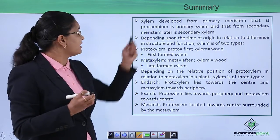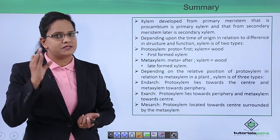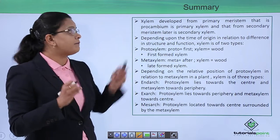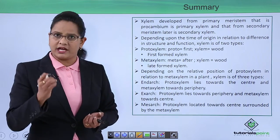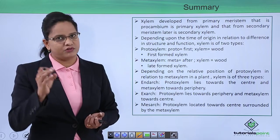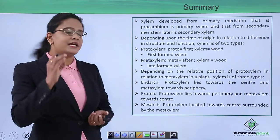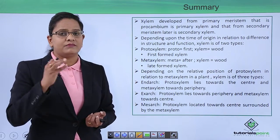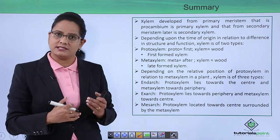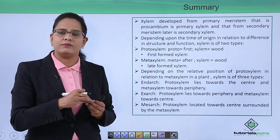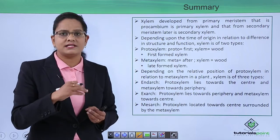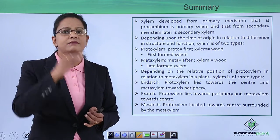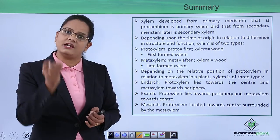To summarize: xylem developing from the primary meristem is primary xylem; from the secondary meristem is secondary xylem. Based on time of origin, there are two types — proto xylem (first-formed) and meta xylem (later-formed). Based on position, they are further divided into endarch (proto xylem towards center), exarch (proto xylem towards outside, meta xylem towards center), and mesarch (proto xylem in center, meta xylem surrounding).